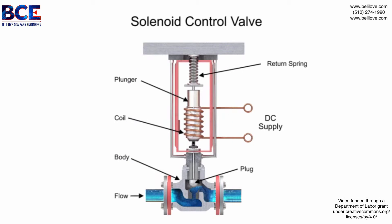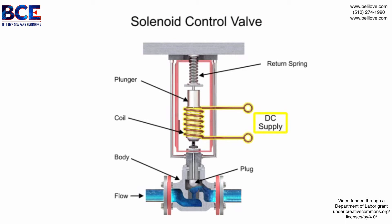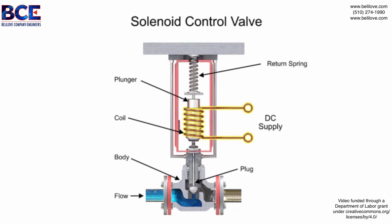For on/off control of the valve, a solenoid is used to actuate the valve to a fully closed or fully open position. Applying current to the coil generates a magnetic field that moves the plunger downward against the return spring. With zero current applied to the coil, the spring pulls the plunger upwards to the fully open position for a normally open state control valve.